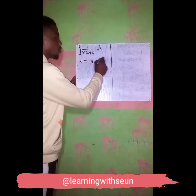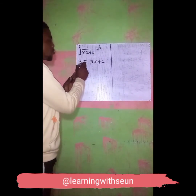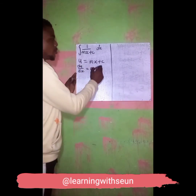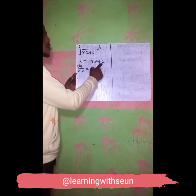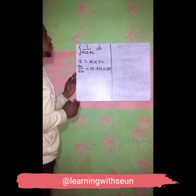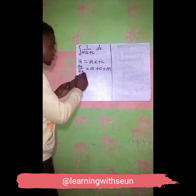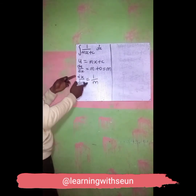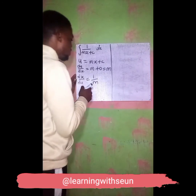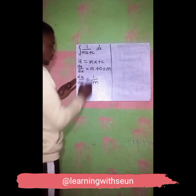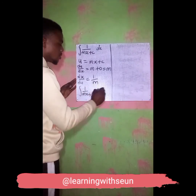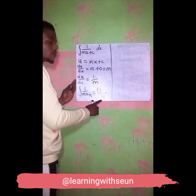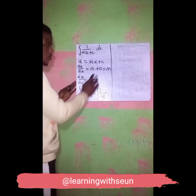Let u equal to anything you have in the denominator, which is mx plus c. From here I'm going to say du over ds equals — if I differentiate mx I'm going to have m, plus 0 which is a constant — so my final answer will be m. From here I will now say ds over du equals 1 over m, because it is the inverse. So from here I can now say my integral value of 1 over mx plus c is the same as 1 over m times the integral of 1 over u.